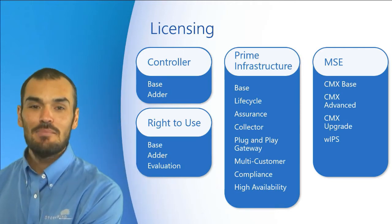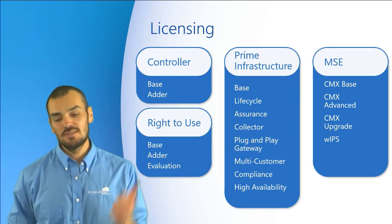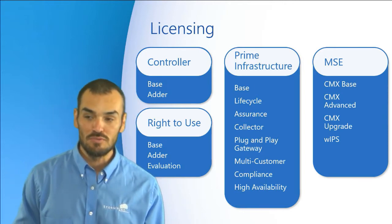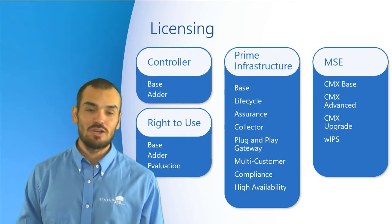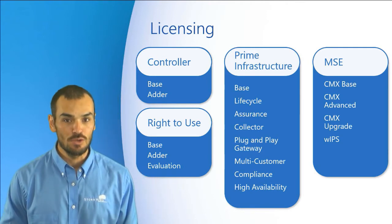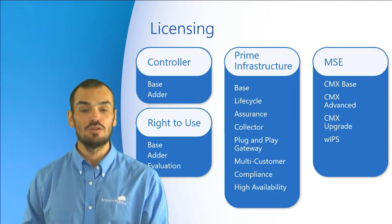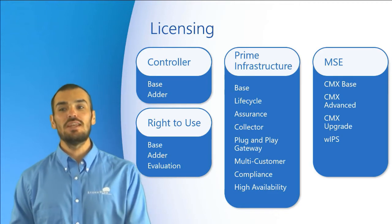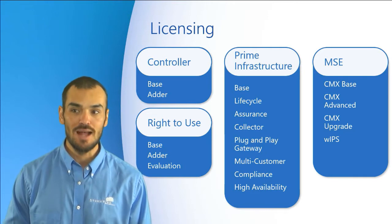In terms of the MSE — the Mobility Services Engine — we have a couple of different options: the CMX Base, the CMX Advance, the CMX Upgrade, and the Wireless Intrusion Prevention System. The CMX Base gives us advanced spectrum analysis as well as location tracking for rogue devices, interferers, clients, and tags, and also provides access to the Mobility Services API. The advanced license gives us a partner stream for sending raw RSSI values of RFID tags to partner applications.